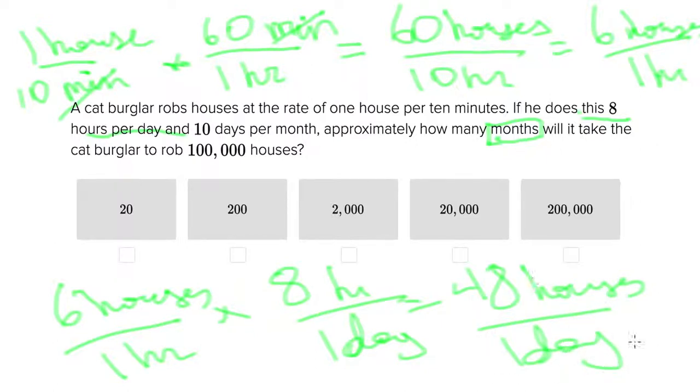Now we know we're robbing 48 houses per day. But the next thing we need to figure out is how to turn this into months. We know that this is only happening 10 days per month, so we can just multiply this by 10 and we're going to be robbing 480 houses per one month.